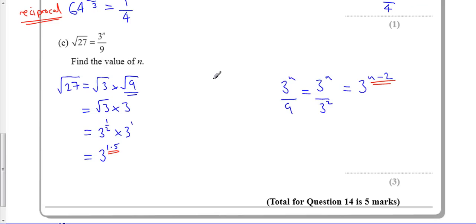So I now know that n minus 2 is got to equal 1.5. Or, n is equal to 1.5 plus 2. n is therefore just the number 3.5. So 3.5.